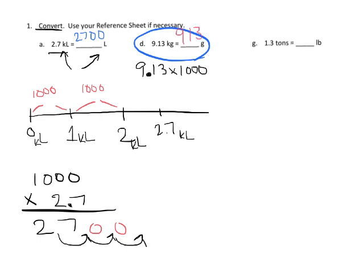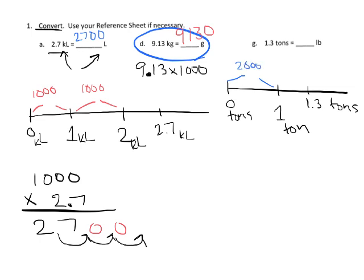And then this last one, tons, we're turning tons into pounds. So if we're going to model this, we've got zero tons and we've got one ton and then we've got 0.3, so we've got 1.3 tons. And we know that each ton is equal to two thousand pounds.